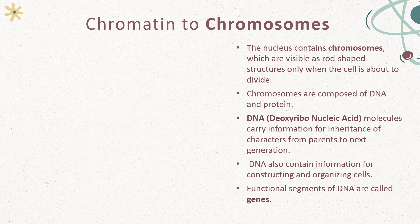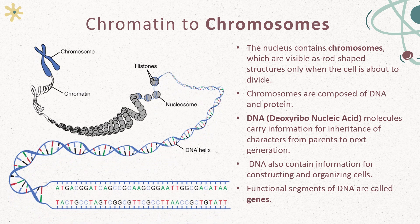Let us now understand how chromatin gets condensed and organized into chromosomes. To understand this, you must understand the basic unit that makes DNA. If you look at the bottom of this image, there are several ATGC sequences — these are nucleotide sequences that constitute and make up DNA, which is deoxyribonucleic acid. This is a molecule that carries information for inheritance of characters from parents to offspring — transferring characters from parents to the next generation.